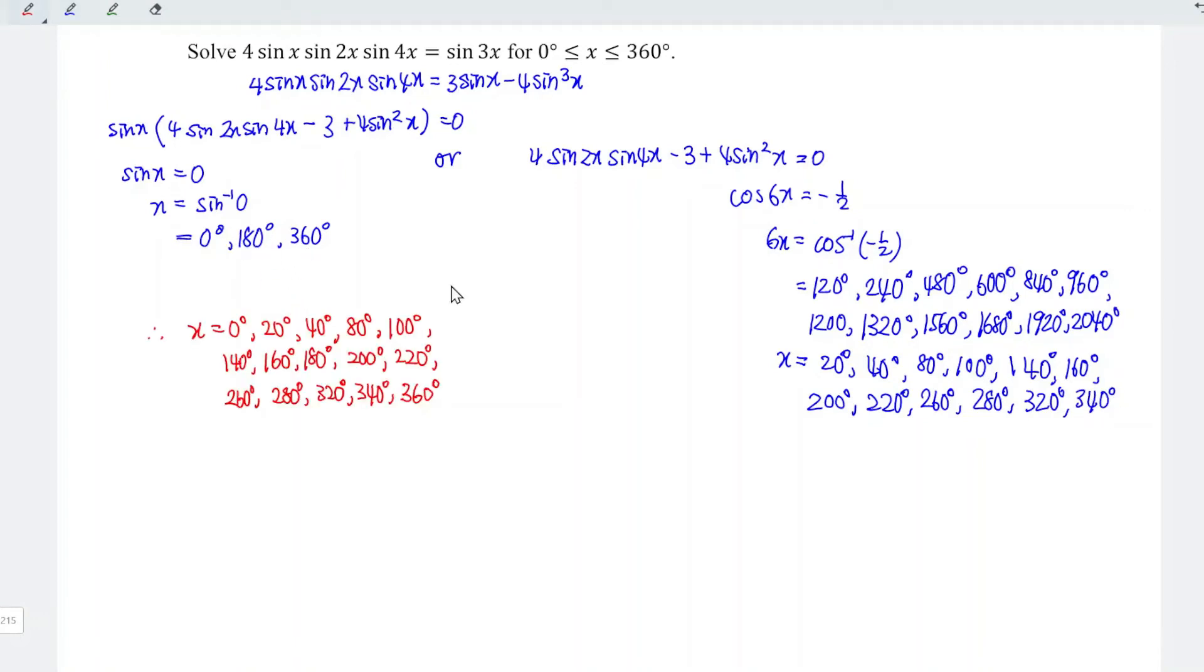Lastly, arrange all the angles in ascending order and we conclude that there are 15 angles that can satisfy the equation and hence we're done. Okay, that's all for this video. Thanks for watching. Hope you like this. See you.